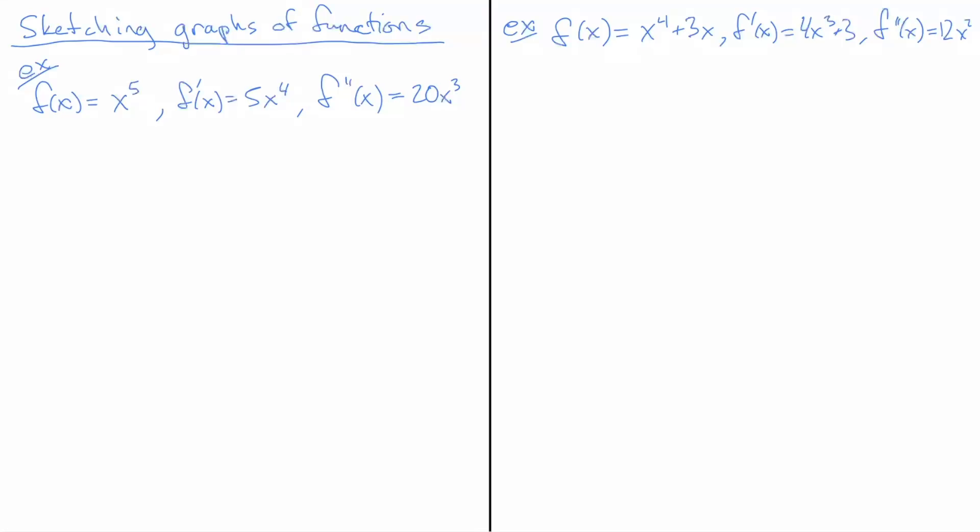First, we should analyze the function f itself, not its derivatives. Finding roots, we see there's a zero at x=0. When x is less than zero, x^5 is negative, and when x is greater than zero, x^5 is positive. That's the first thing to notice.